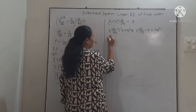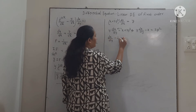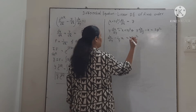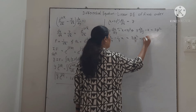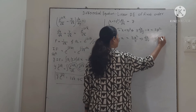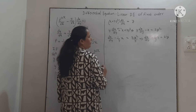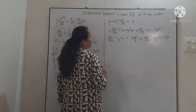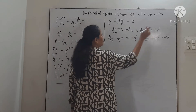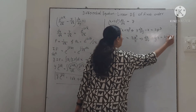The coefficient of dx/dy must be 1, so we divide throughout by y. We get dx/dy − (1/y) · x = 2y³/y, that is dx/dy − (1/y) · x = 2y². Note that 2y³ divided by y gives 2y².